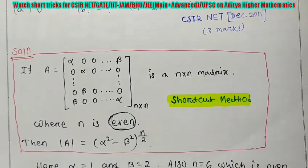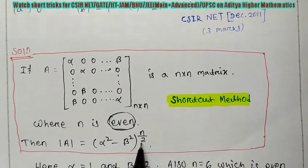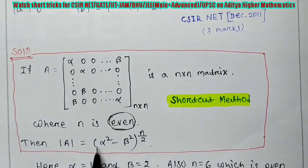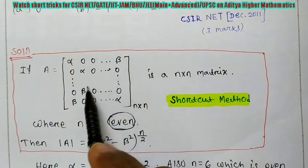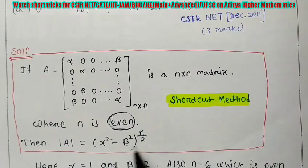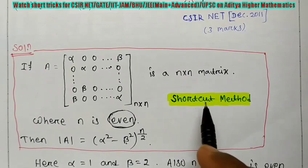Then what is the determinant? It is (alpha squared minus beta squared) to the power N by 2. That means the element which is given in the diagonal, we are taking as alpha. And the elements in the reverse diagonal, we are taking as beta. And we are finding the power N by 2. And remember that N must be even. Otherwise, you cannot apply this trick. And this is the shortcut method.